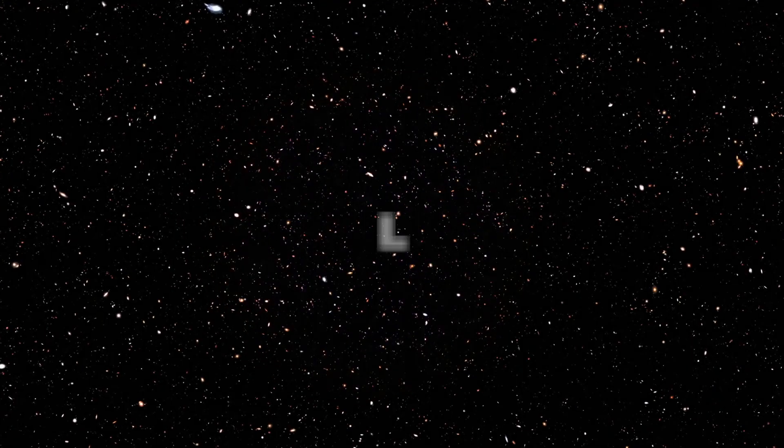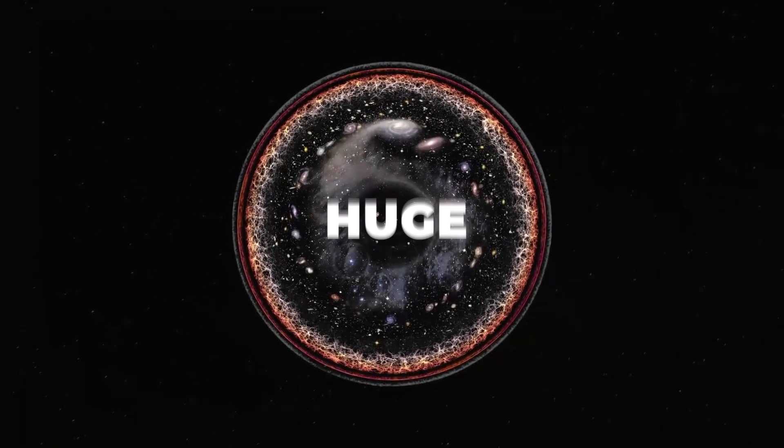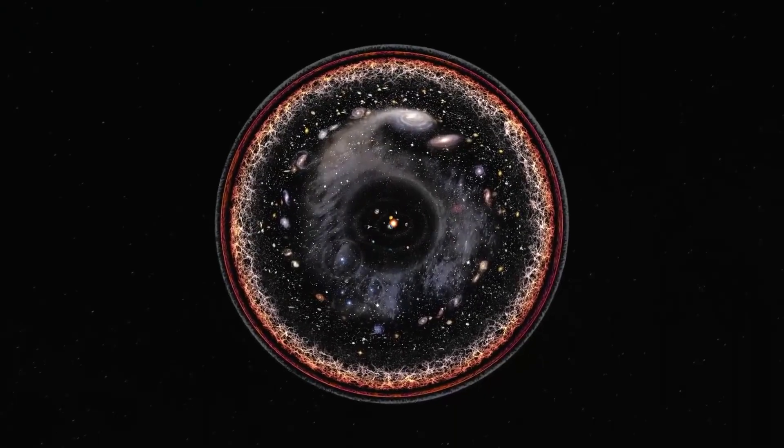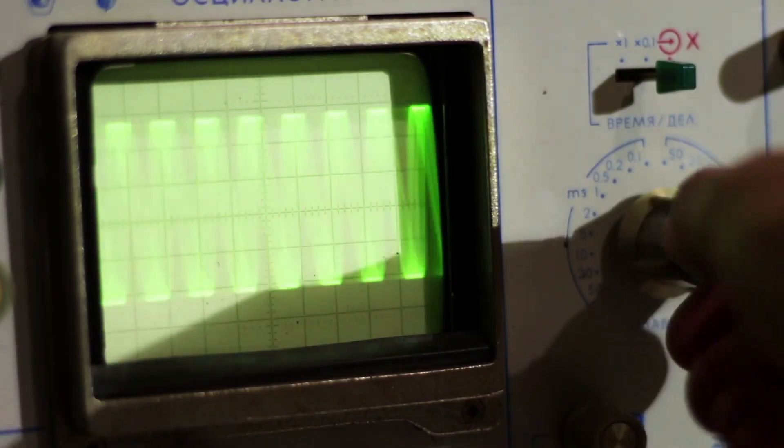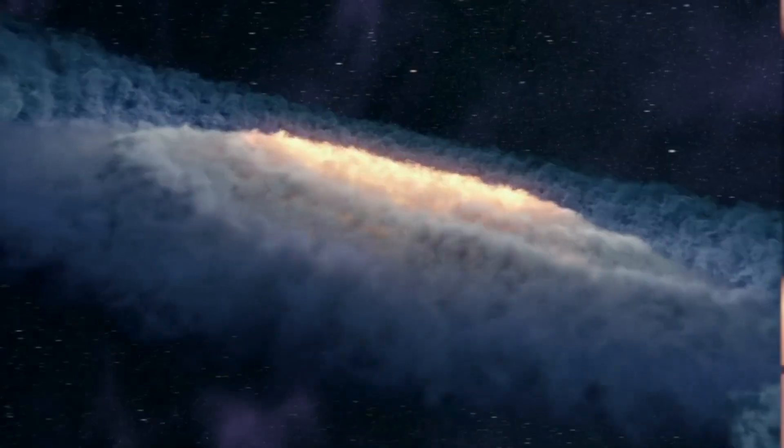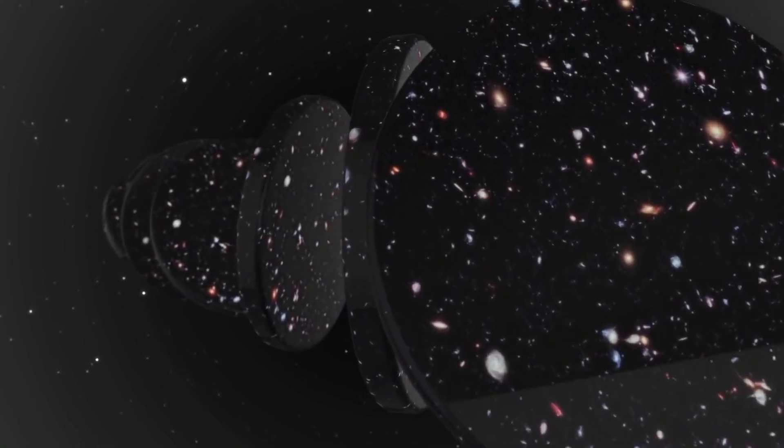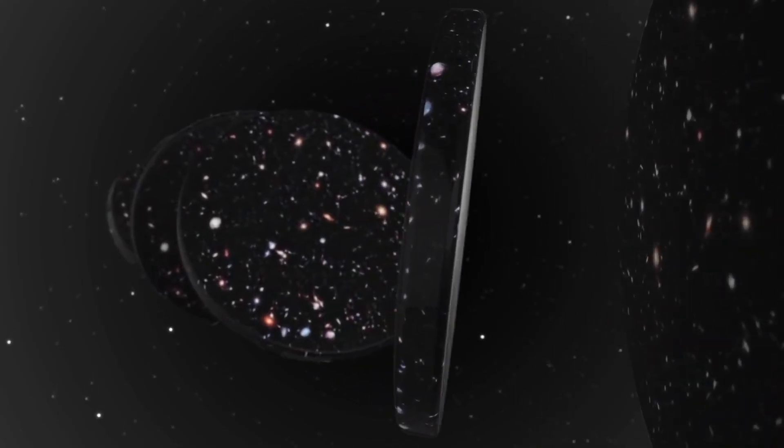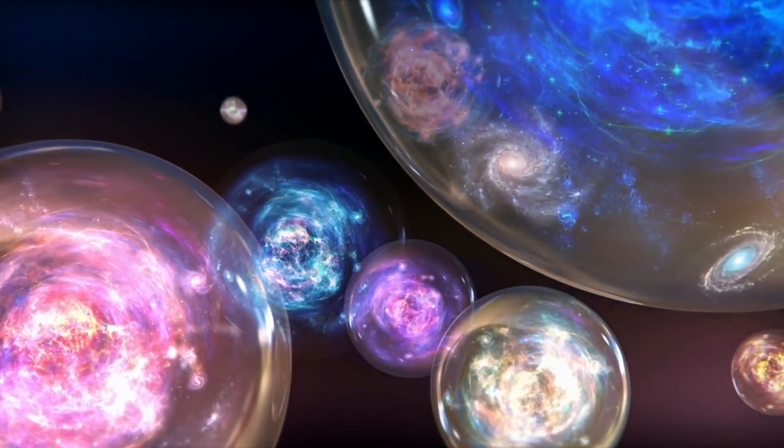The observable universe is huge. It spans for 94 billion light years, but science isn't so sure that we can see everything that's out there. There are those who believe that our universe is just one of a series of an infinite number of universes, all existing in parallel with each other.